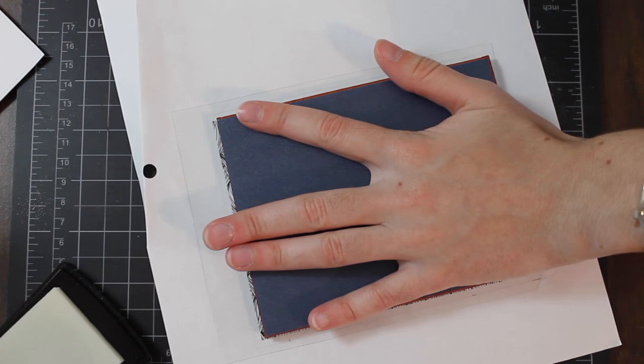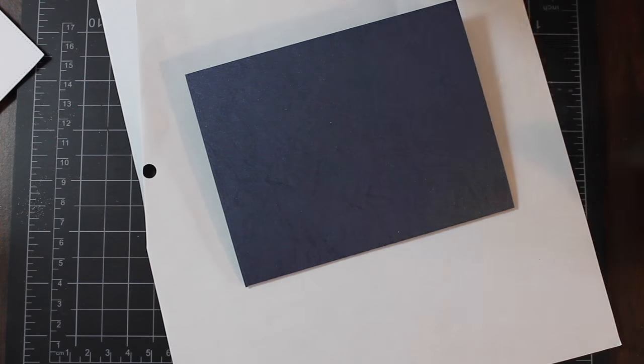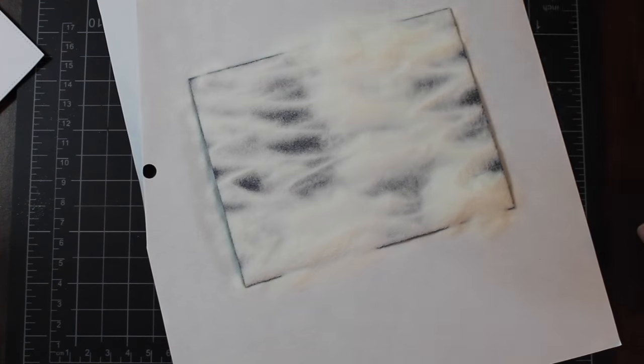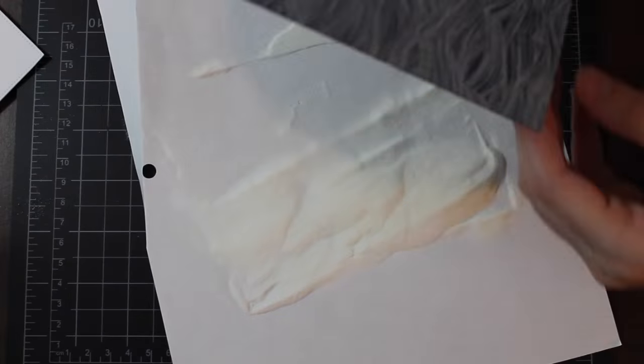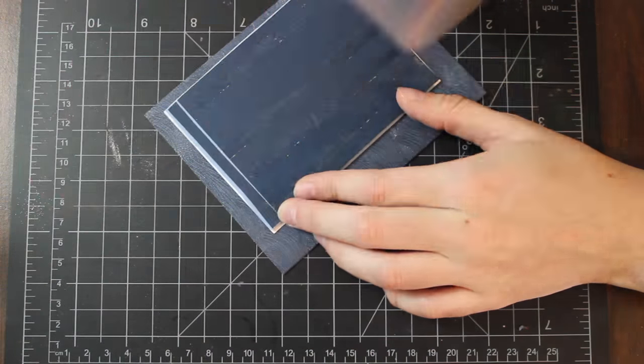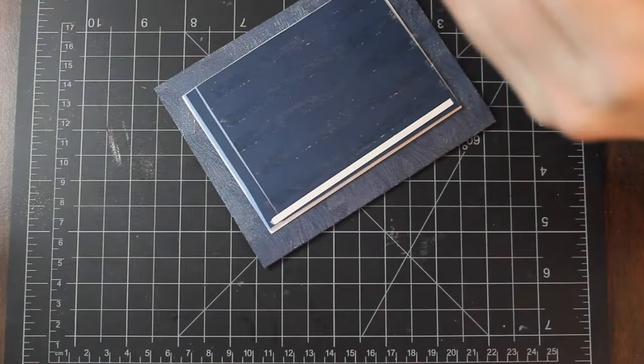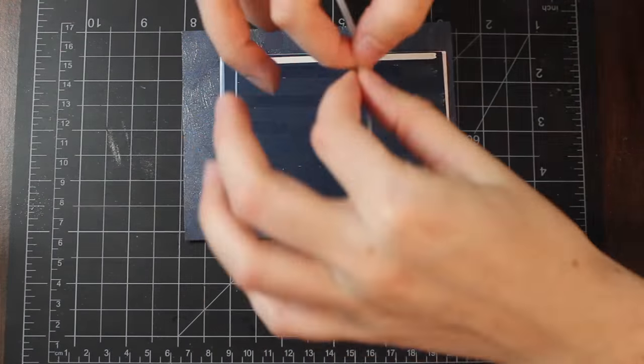So for the background of the card, I am taking the wave background stamp by Hero Arts. It's very detailed, it's super pretty, and inking my cardstock up with Versamark in that background, covering with clear embossing powder, heat embossing, and it just gives it a nice little touch.